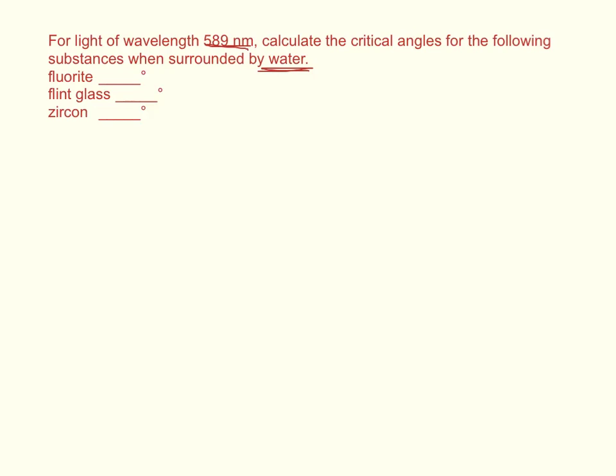And the table we're given in chapter 22, table 22.1 I think, is given for all substances at 589 nanometers. So anyhow, we're going to start out with Snell's law.